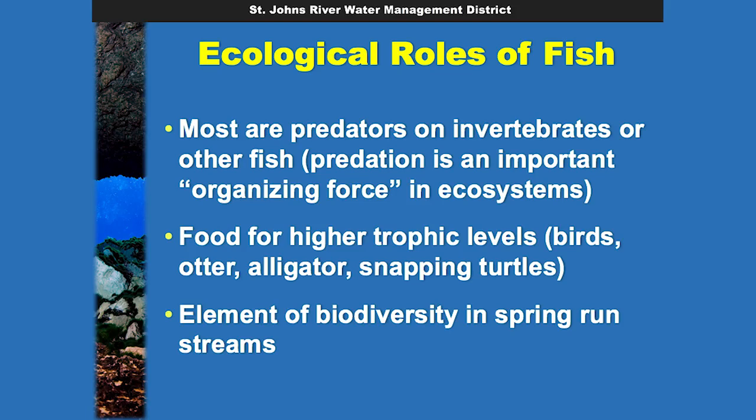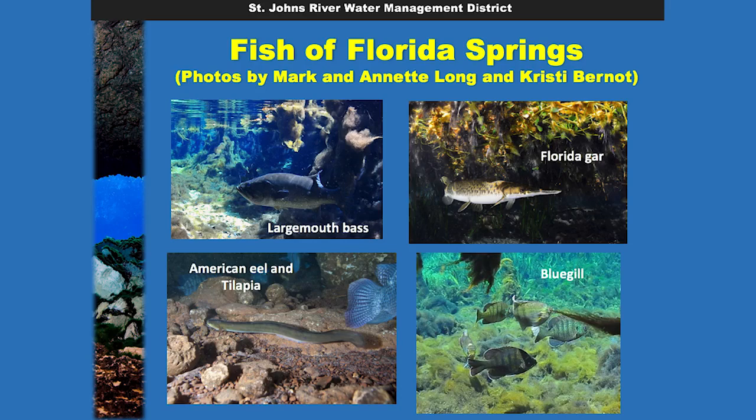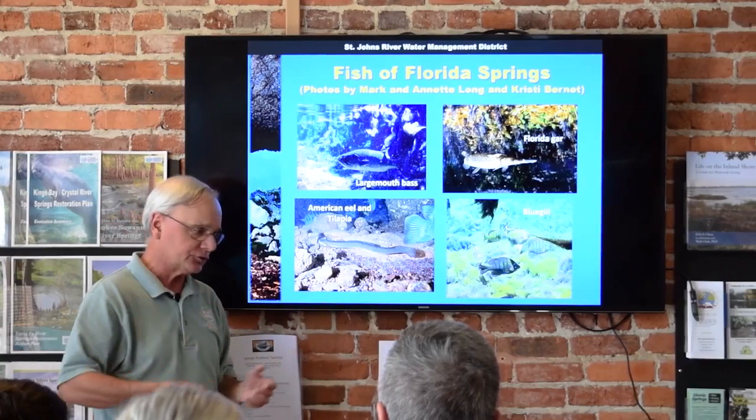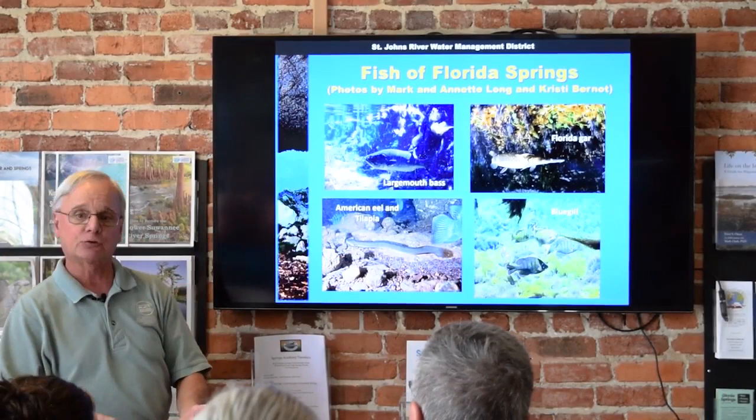Some of the fish we see: largemouth bass, gar, various bream like bluegill, and we do get some exotics — tilapia — which is an exotic fish. And eel — like the river prawn, eels are nocturnal, coming out at night to forage. They're predators, but during the day they'll typically head down into the spring caves. This picture was taken by Christie at the bottom of the natural well in Silver Glen Spring, which is the little secondary vent in Silver Glen.